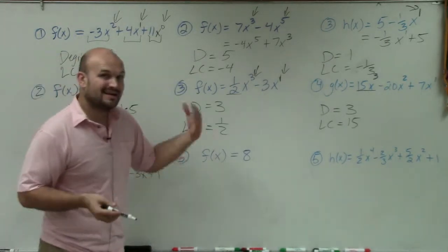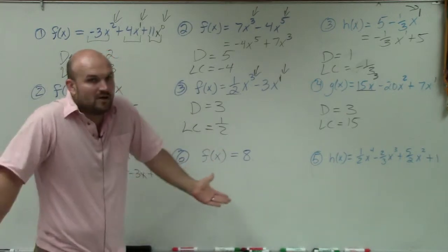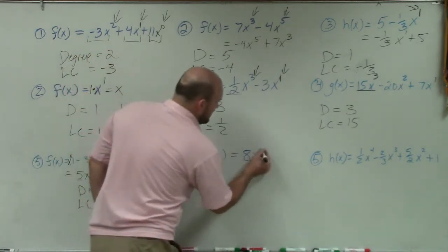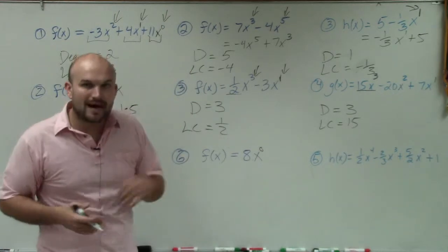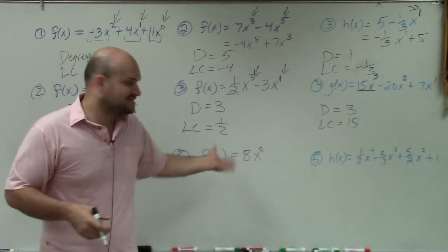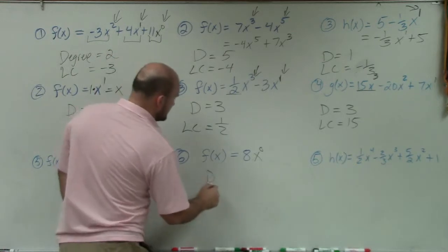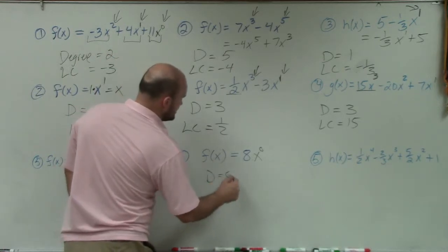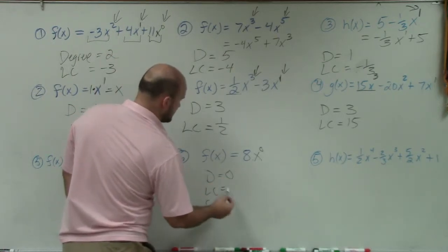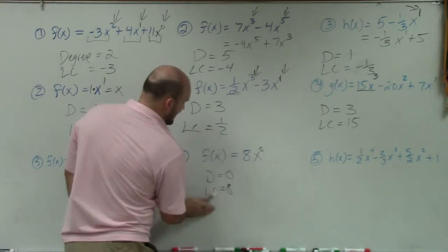Over here, as I mentioned, if you just have 8, I can always multiply by x to the 0 power, because x to the 0 power is just 1. So you could say your degree is 0, and your leading coefficient — or what we just call the constant — would be 8.